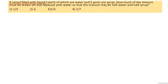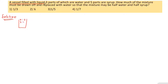Question: a vessel has a liquid. In the vessel, water and syrup are in a 3 to 5 ratio. We need to find how much mixture to draw off and replace with water so the result is equal parts water and syrup.